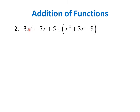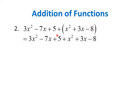Next we have to add 3x squared minus 7x plus 5 to the function 3x squared plus 3x minus 8. So if we distribute this positive sign to each term in the second function, the terms will retain their original signs. Let's copy 3x squared minus 7x plus 5, and we can also copy these terms, so we have plus x squared plus 3x minus 8.